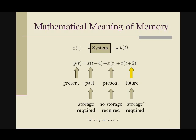Now what does this have to do with memory? Well, if a system depends on the past, it needs memory. It has to store the values that occurred in the past so that it can compute the values in the present. If a system only depended on the present, you wouldn't need any memory because you wouldn't need to store anything.